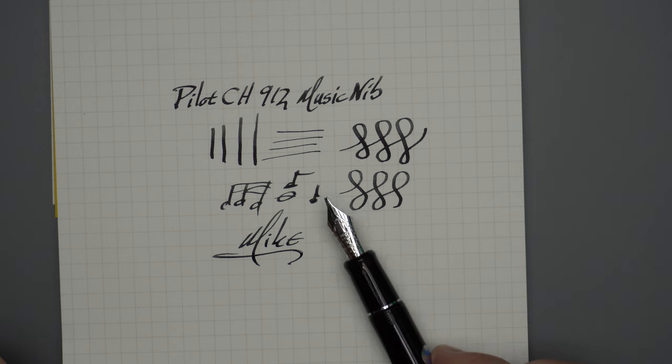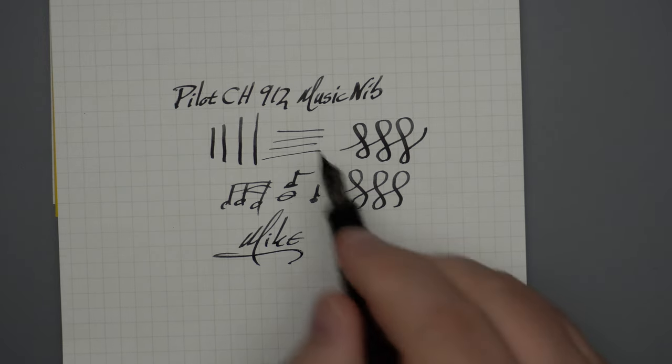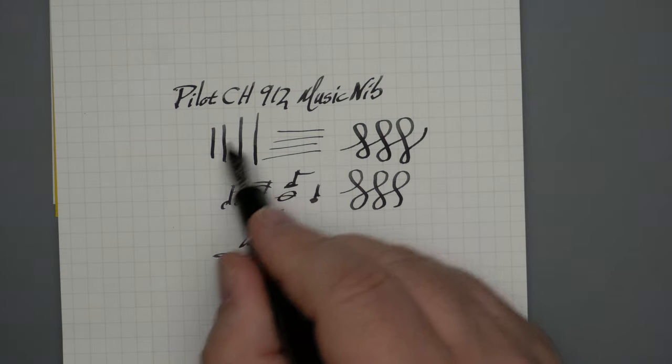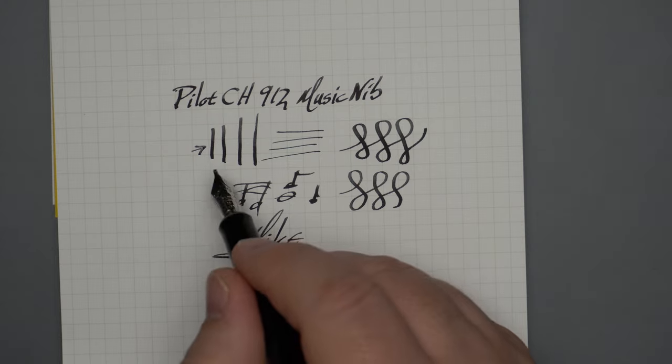So, a really nice nib, a little bit more on the italic side, a little bit sharper on the edges, which gives you a nice sharp line here at the edge, sharper than most of the other music nibs I've tried.